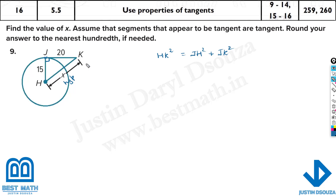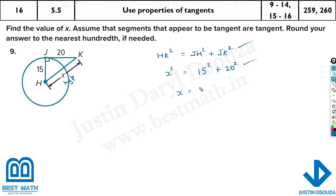Now we substitute. HK is x, so x squared equals — JH is 15, so 15 squared — plus JK is 20, so 20 squared. Technically, if you write the formula, then the substitution, and then the answer directly, you should get full marks, because you have written the formula, the substitution, and you can use your calculator to get the answer.